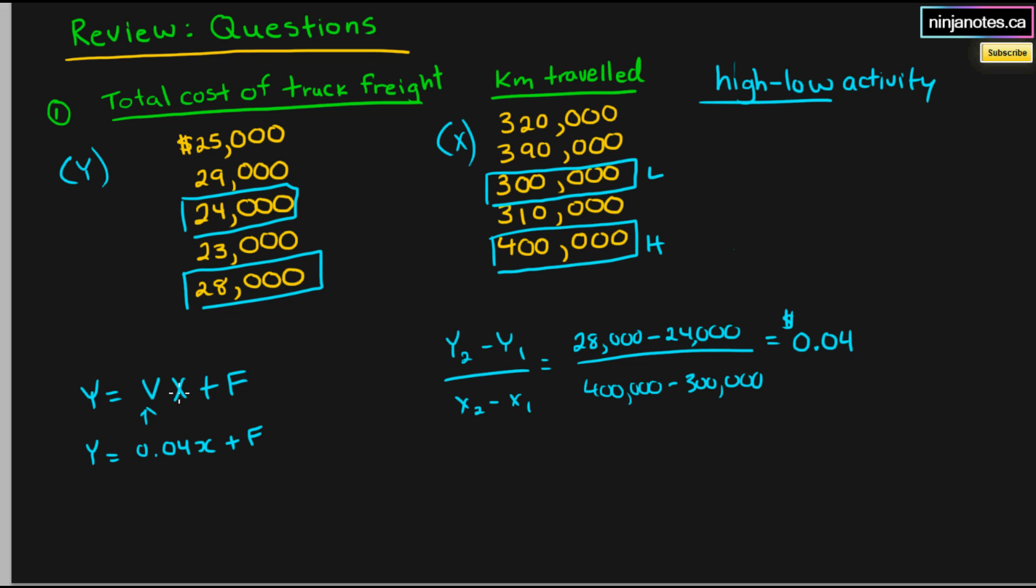And we can use one of these total costs and plug it into y, but we have to use its respective cost driver or x value. So let's say we use 24,000. We're going to plug 24,000 right on the left side as y, because y is total cost. We'll have our slope. And for our x value, we're going to use 300,000, since that is the respective amount of kilometers for a cost of 24,000. And we're going to have f, since we're solving for f.